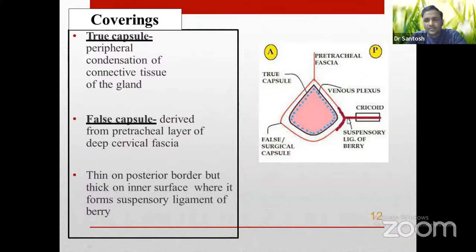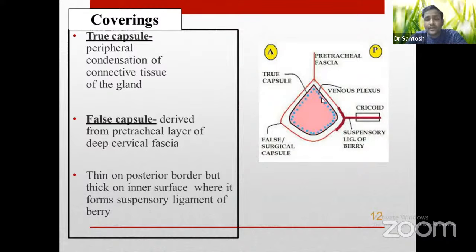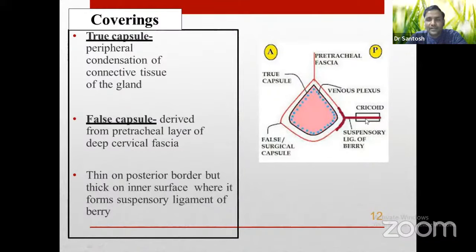The inner surface of the pre-tracheal fascia joins the cricoid cartilage to form the ligament of Berry. This is why the thyroid gland moves with deglutition (swallowing). You can differentiate a midline neck swelling from a thyroid swelling by observing movement during swallowing. The thyroid gland moves during swallowing because it is connected to the cricoid cartilage via the ligament of Berry, which is part of the articulation of the pre-tracheal fascia on the posteromedial side.